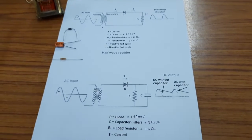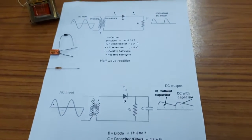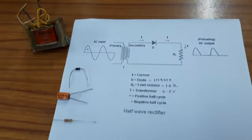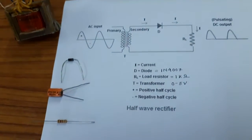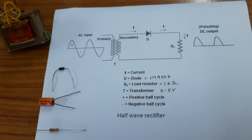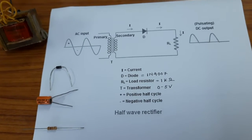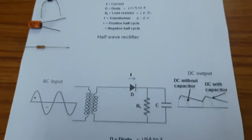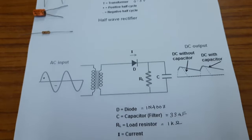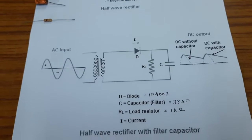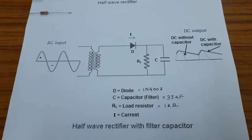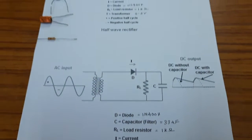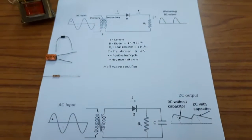What is a rectifier circuit? A rectifier circuit is nothing but a simple diode or group of diodes which convert the alternating current into direct current. The basic types of rectifiers are half wave rectifier and full wave rectifier.